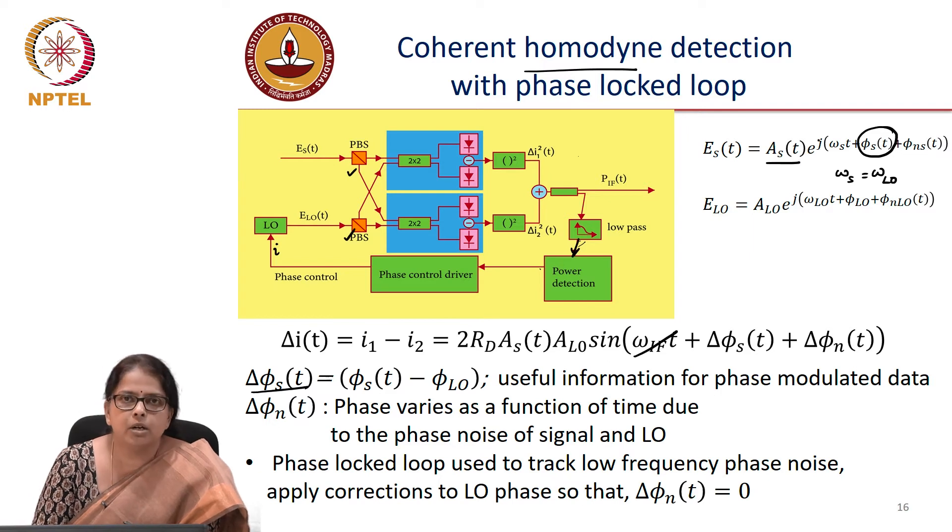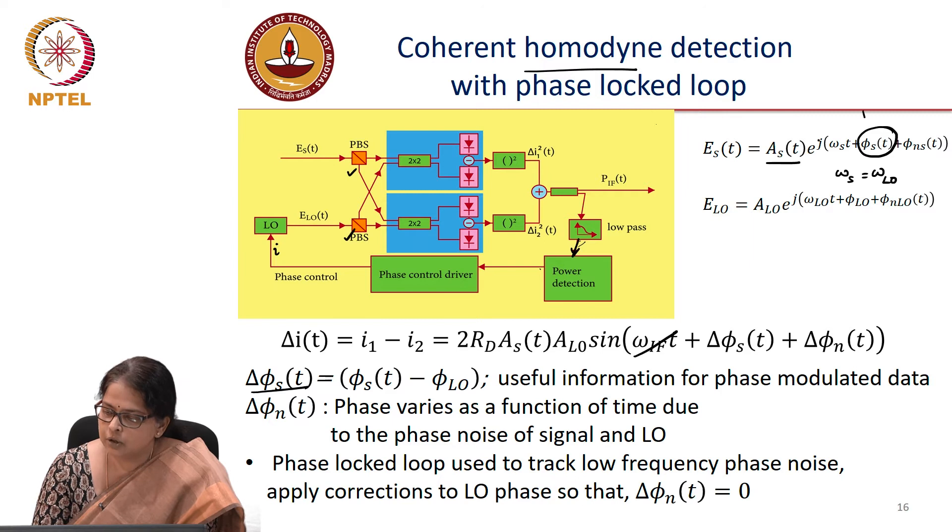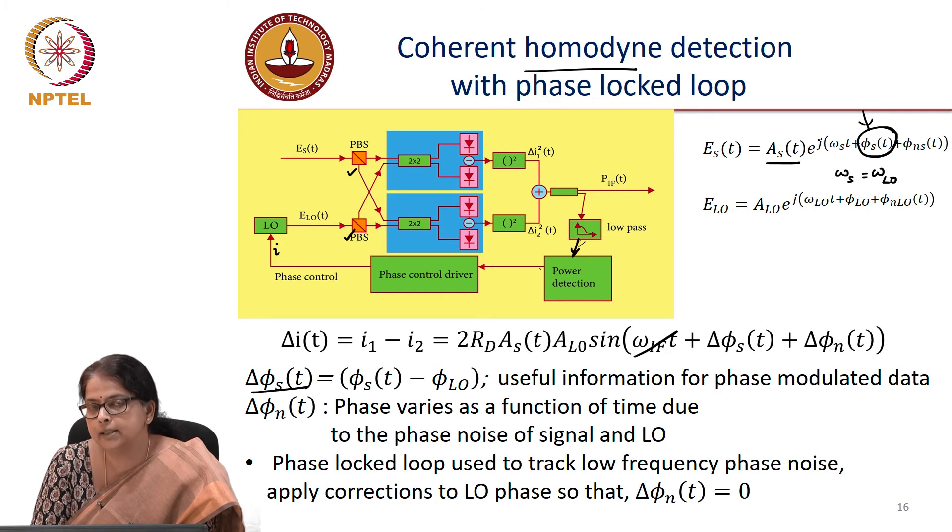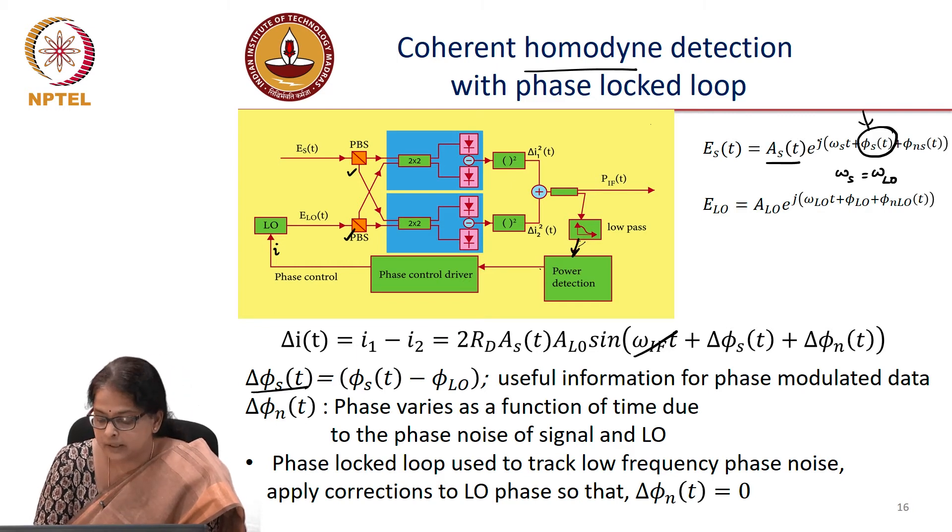There could also be amplitude modulation in the signal. So you could have As as a function of time. You could also have phi s as a function of time. Both can carry data. For instance, in a 16 QAM modulation, you could have amplitude also carrying information and also phase carrying the information and you are interested in detecting both.